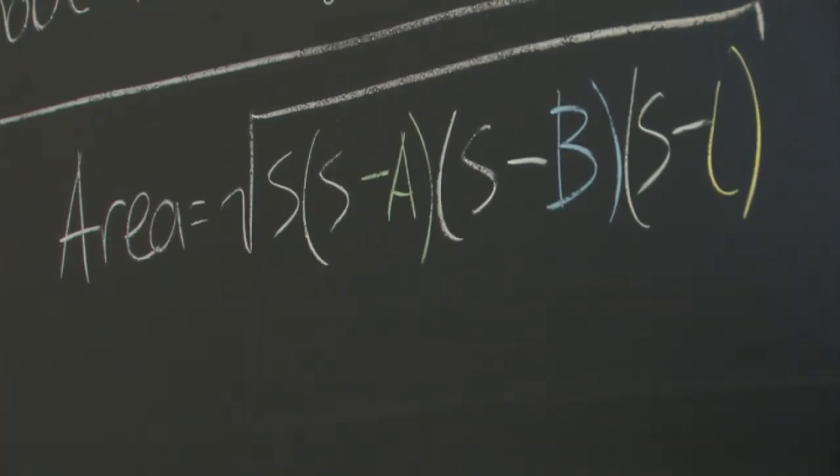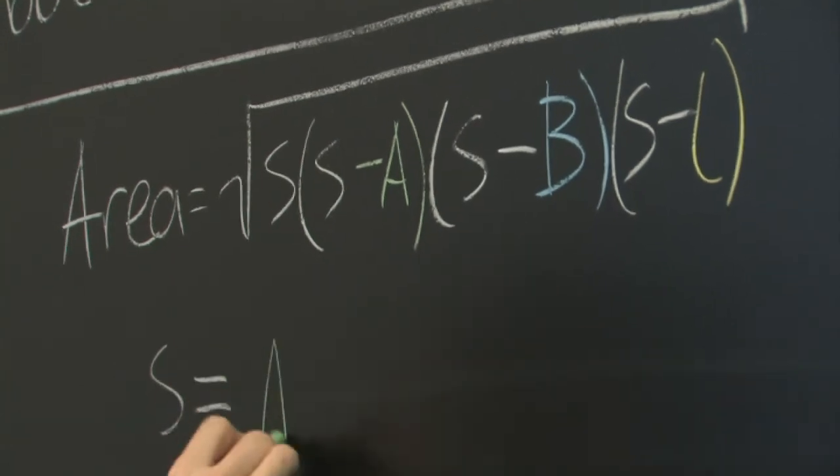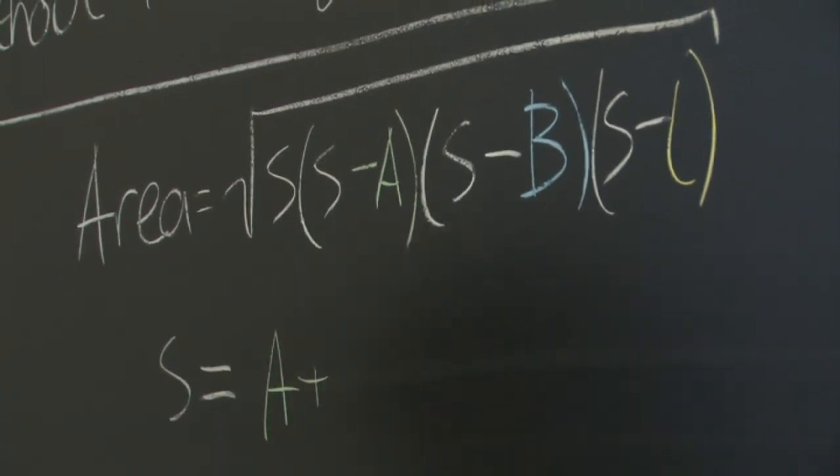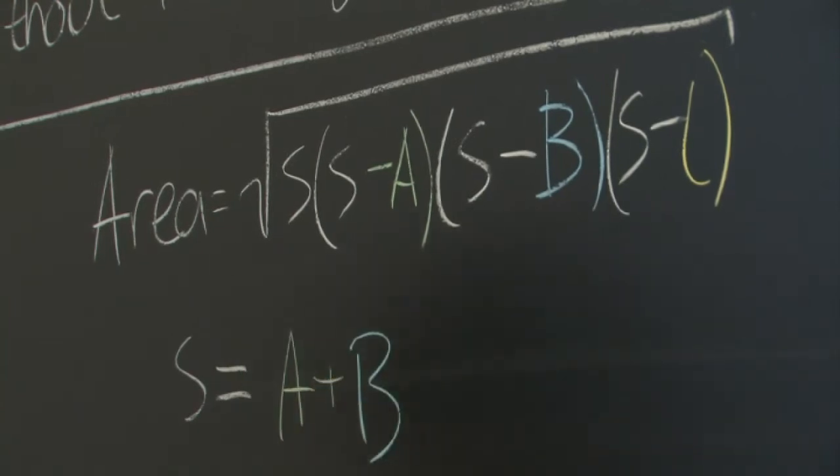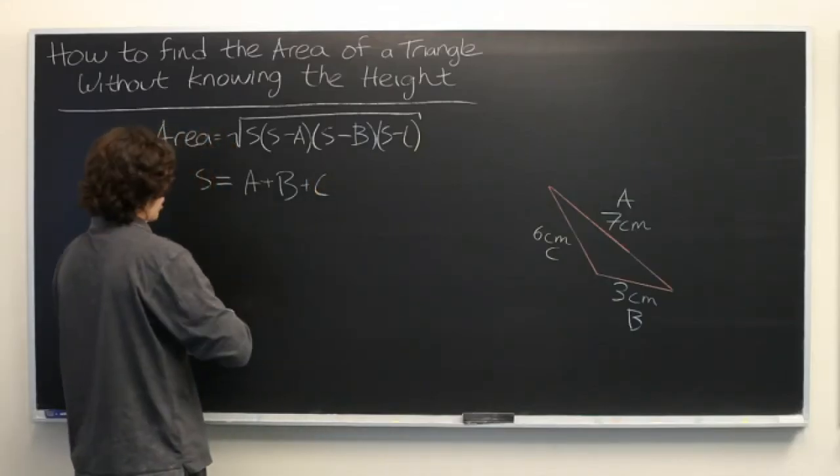Where S refers to the semi-perimeter of the triangle, or one-half of the perimeter. In other words, it is (A plus B plus C) all over 2.